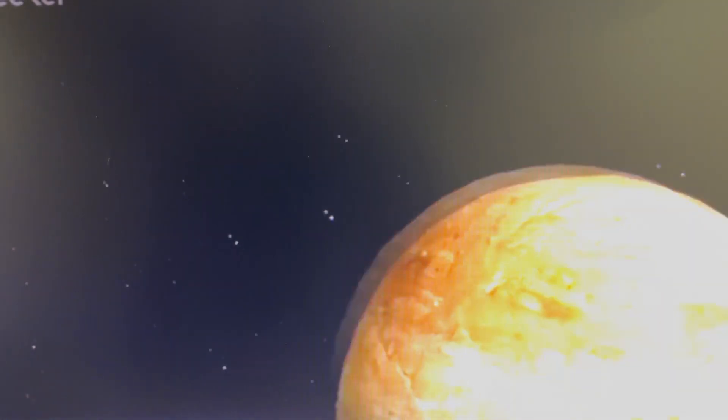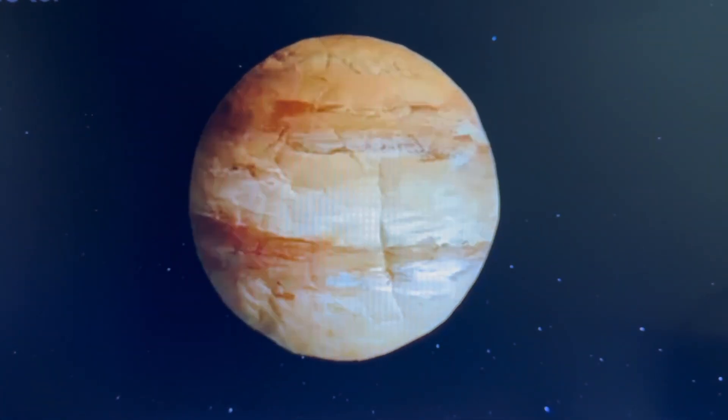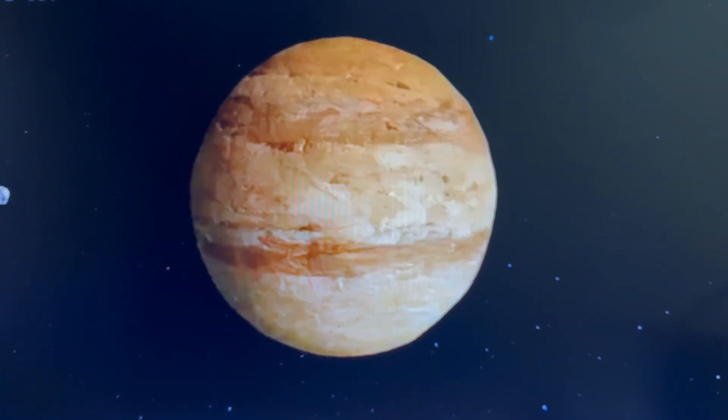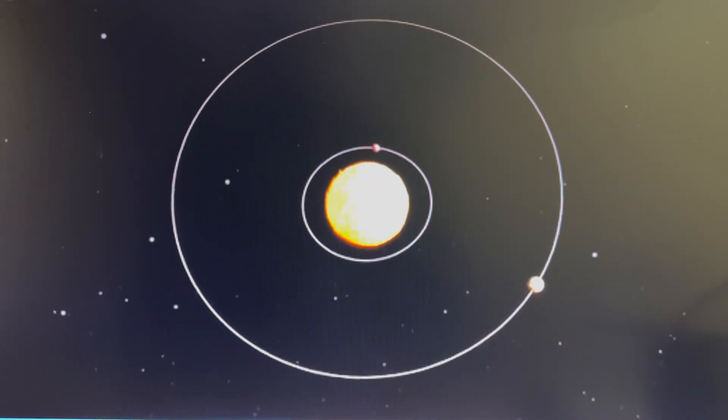Take Jupiter, for example. The gas giant is so large, its gravitational pull impacts the smaller celestial bodies around it, trapping them in its orbit and altering their trajectories. Jupiter's pull is even thought to be the reason why Mars' orbit is slightly elliptical.